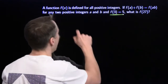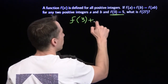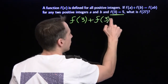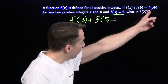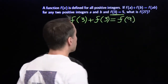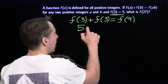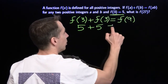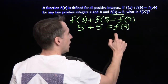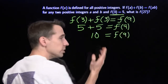We put in a=3 and b=3. So f(3) plus f(3), because we know what each of these is, equals f(3×3), which is f(9). Since f(3)=5 and f(3)=5, we now know f(9) equals 5 plus 5, which is 10.